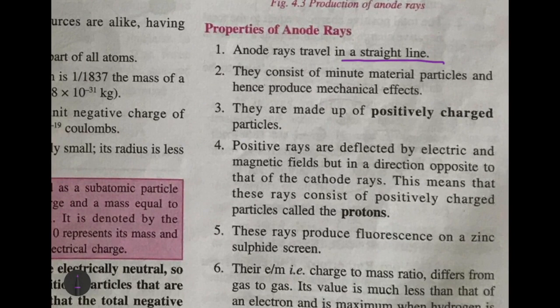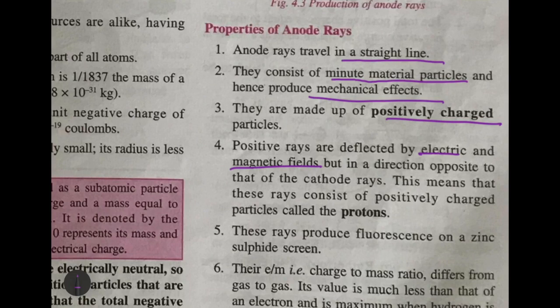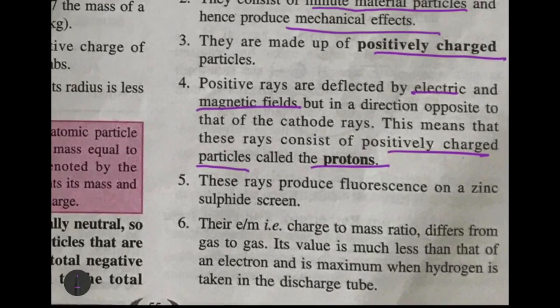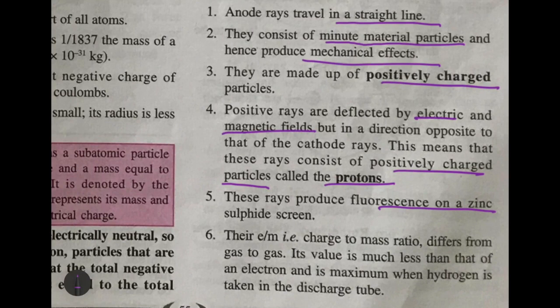The properties of anode rays: they always traveled in a straight line, they were made up of minute, very tiny material particles and produced mechanical effects, and they were positively charged. Positive rays are deflected by electric and magnetic fields, but in a direction opposite to that of the cathode rays, which meant these rays consist of positively charged particles called protons.